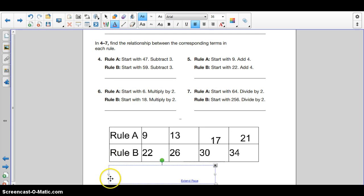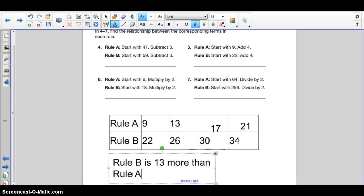The relationship you should have noticed is that rule B is 13 more than rule A.